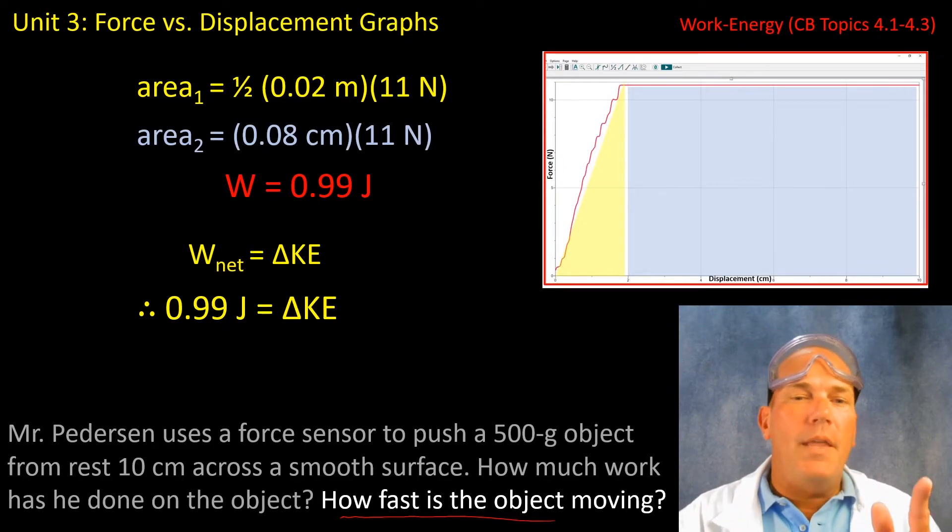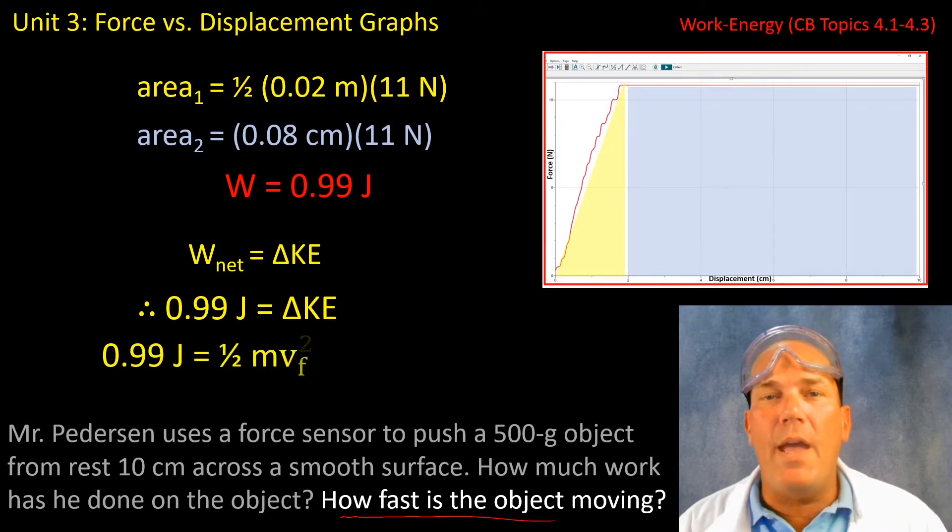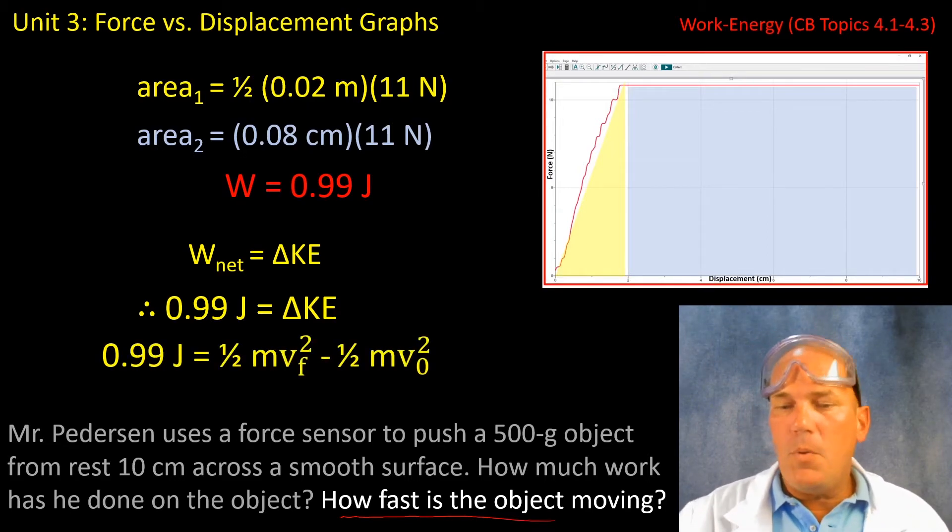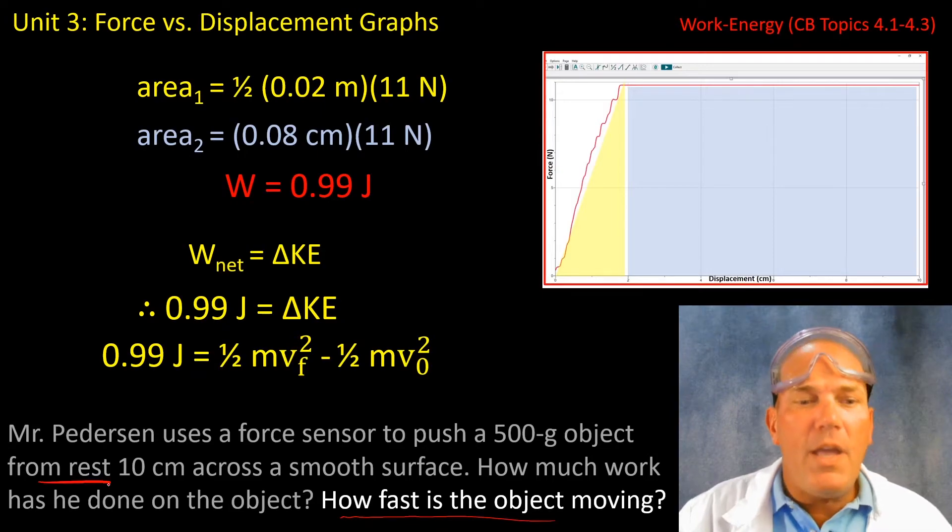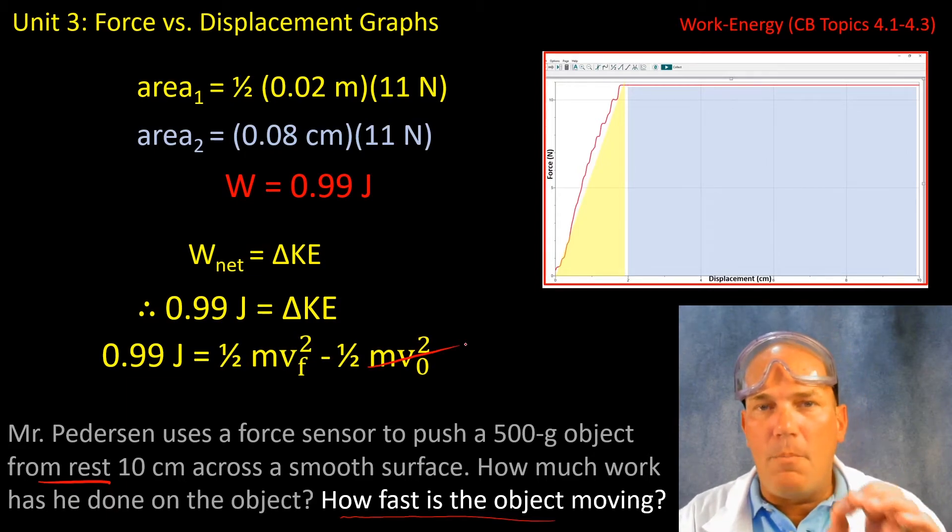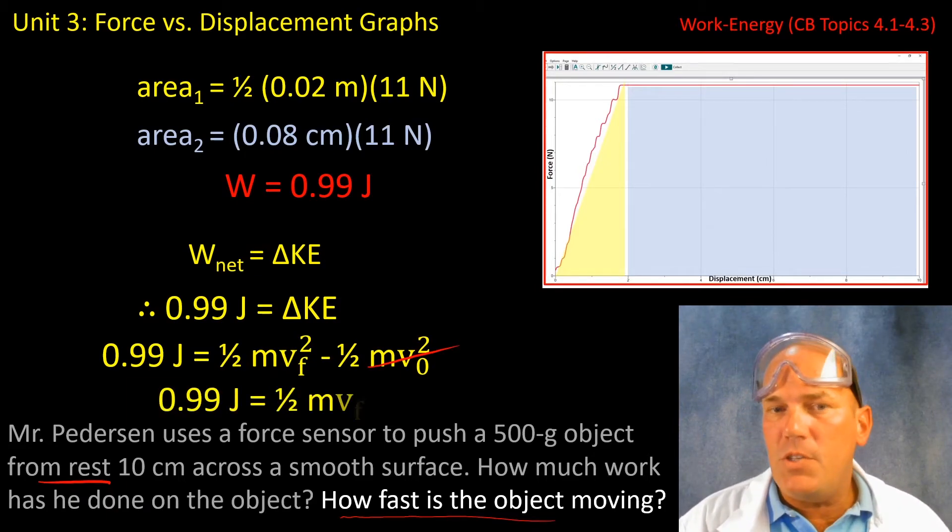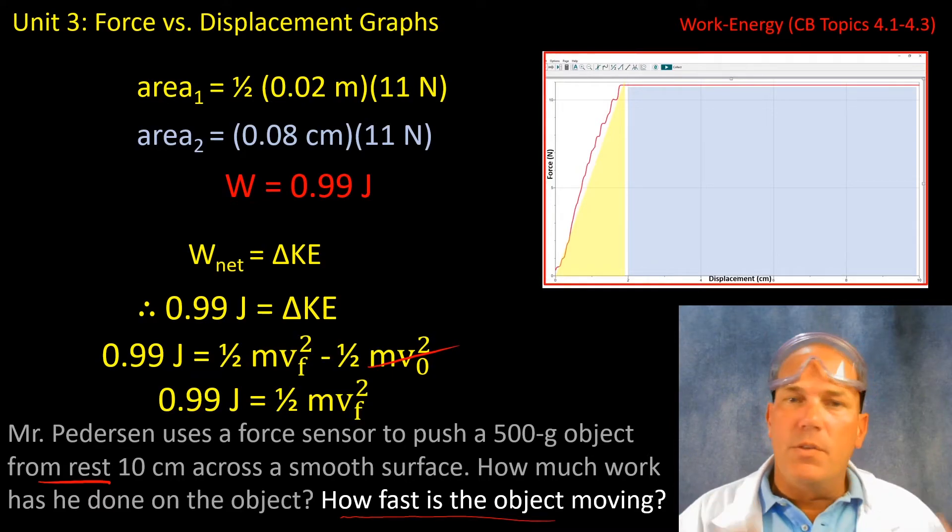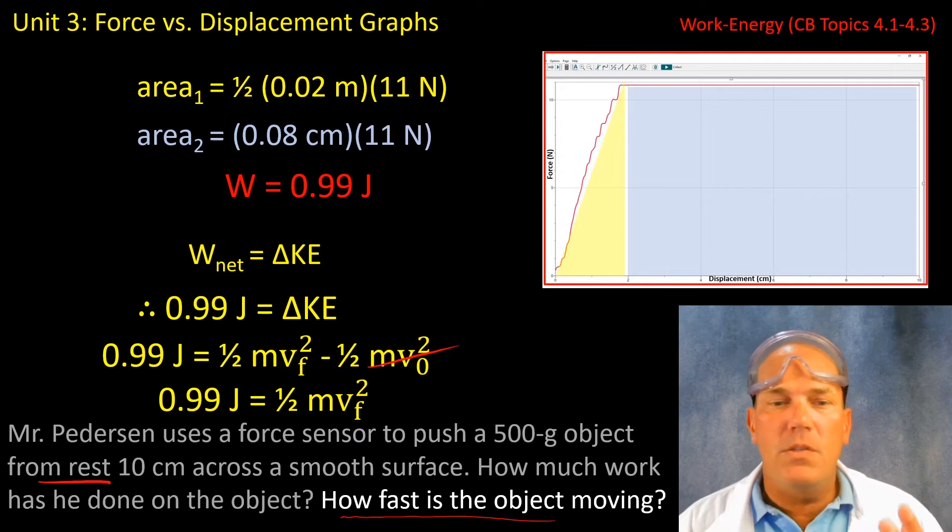Well, remember that this object starts at rest. And that's very important because it starts at rest. We know its initial velocity is zero. Therefore, we can wipe out that portion of the expression. And we're left with 0.99 joules is equal to one half m v final squared.